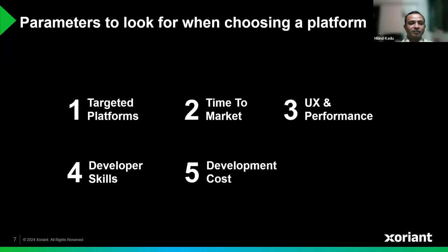The skill sets of your development team matter. If they are expert in web technologies, you can go for React Native or Ionic. For teams proficient in object-oriented languages, Kotlin Multiplatform, Flutter, or MAUI are options. Finding developers with expertise in Dart is challenging due to its lower popularity — Flutter's Dart language has a steeper learning curve compared to other languages. Regarding development cost, while most frameworks are open source and free, Ionic offers additional enterprise features that come with a cost. These are all factors to consider when choosing a framework.